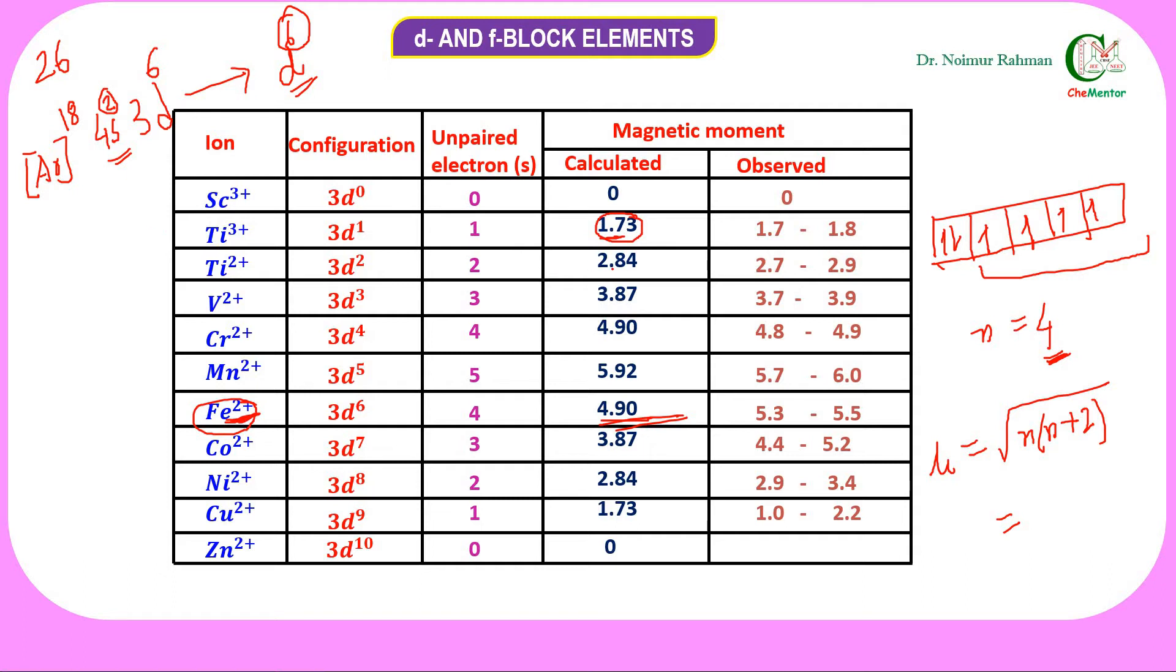From the magnetic moment value itself, 1.73 means 1 unpaired electron; 2.84 means 2 unpaired electrons; 4 point something means 4 unpaired electrons. Just remember that if the number is point something, that first number equals the number of unpaired electrons. These are the experimental values, and these are the calculated values.